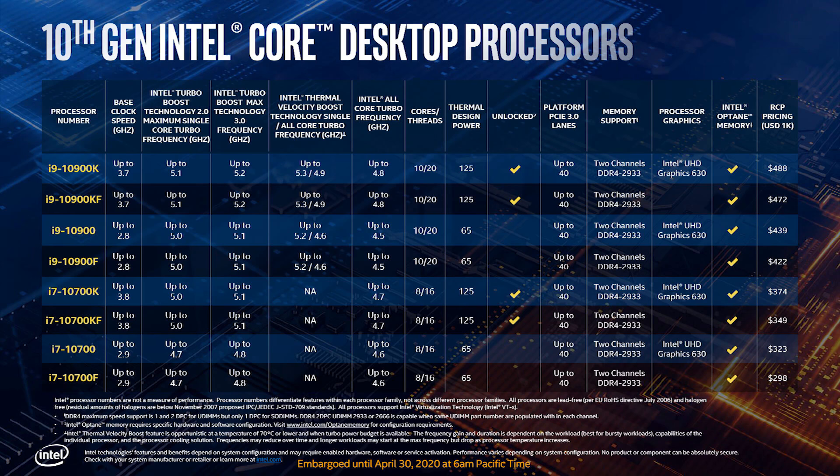The i7 model has 4 variants: i7-10700, 10700F, 10700K, and 10700KF. For i9, there are also 4 variants: i9-10900, 10900F, 10900K, and 10900KF. So overall, all processors have been revealed with Intel's pricing.